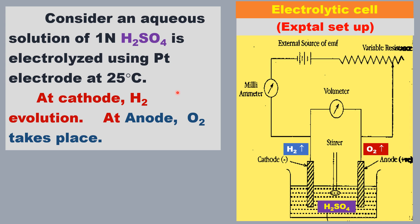Let us see the procedure for the determination of decomposition potential. This is the electrolytic cell used to determine the decomposition potential of the electrolyte. This is the experimental setup. An external source EMF — a battery — is used as a source to supply potential to the electrochemical cell.